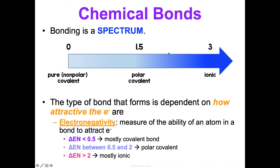If the difference in electronegativity is greater than 2, we say the bond is mostly ionic. The greater the electronegativity difference, the more ionic the compound is. Think of it as tug-of-war: ionic is when one side pulls so hard that the other side lets go of the rope completely. Non-polar covalent is the other extreme — both teams pull the exact same amount and the middle of the rope doesn't move. Polar covalent is somewhere in the middle, where one team pulls a little stronger but both still have hands on the rope.